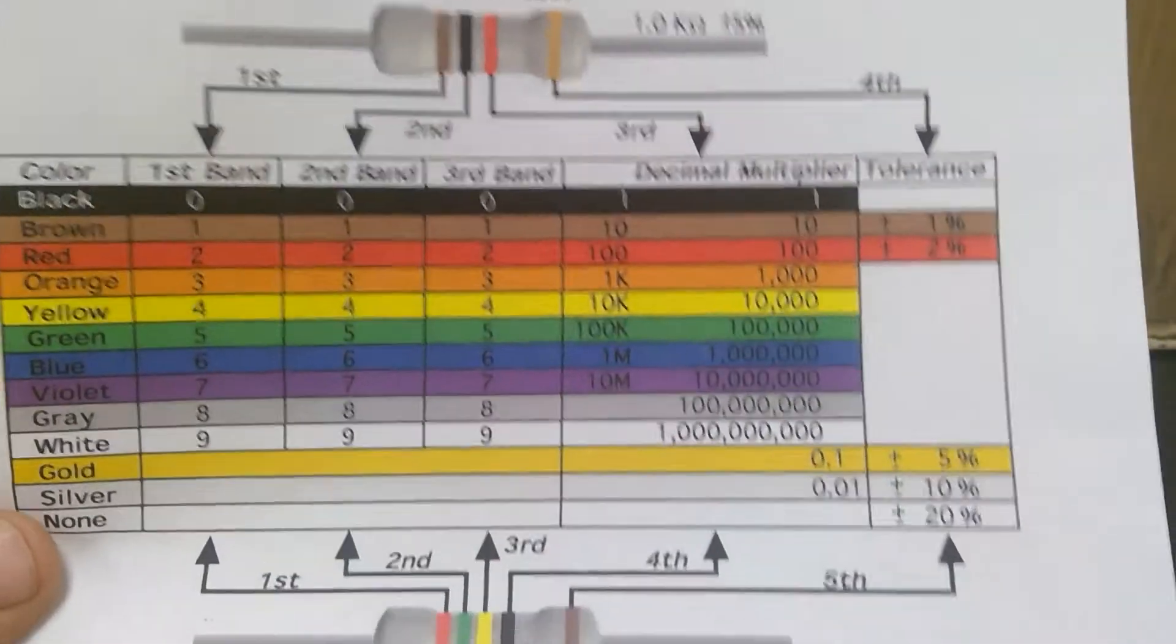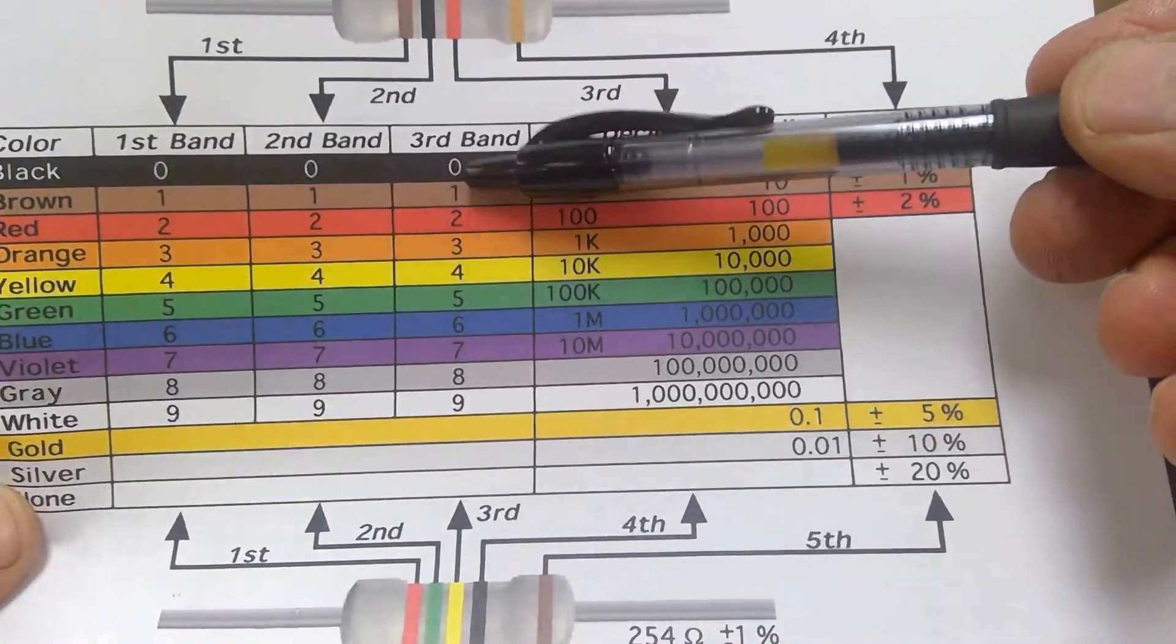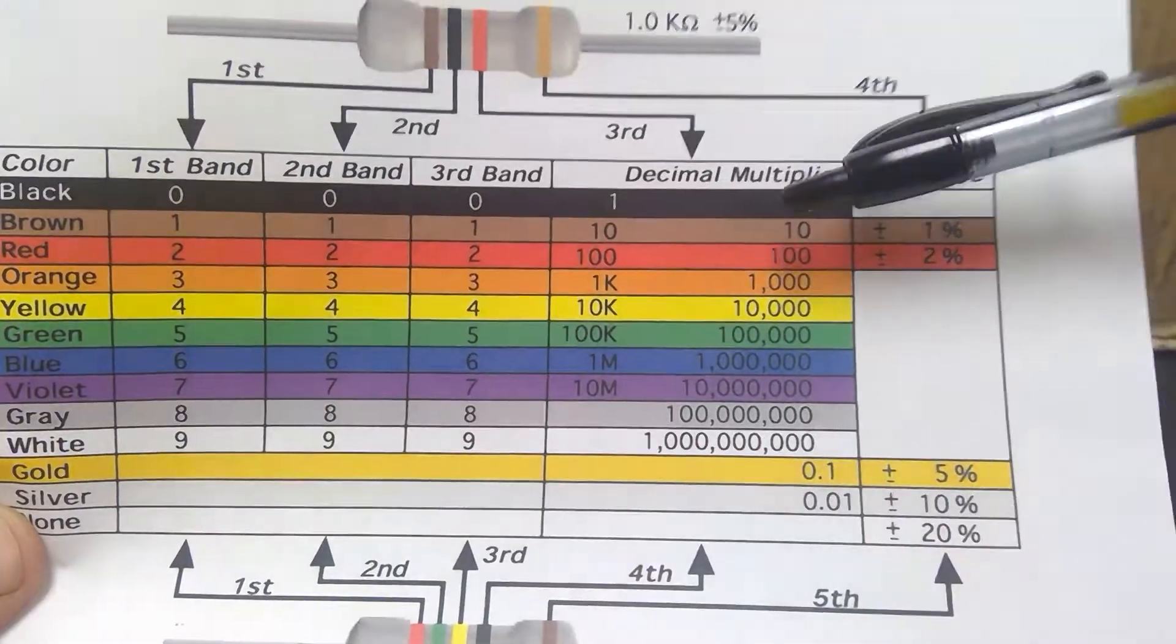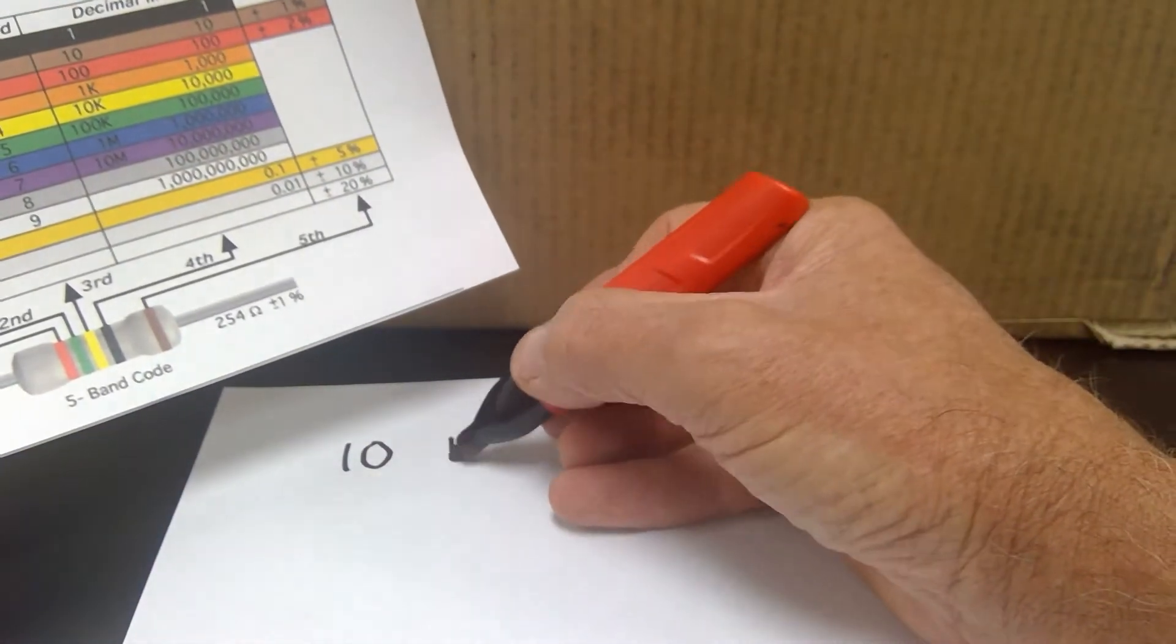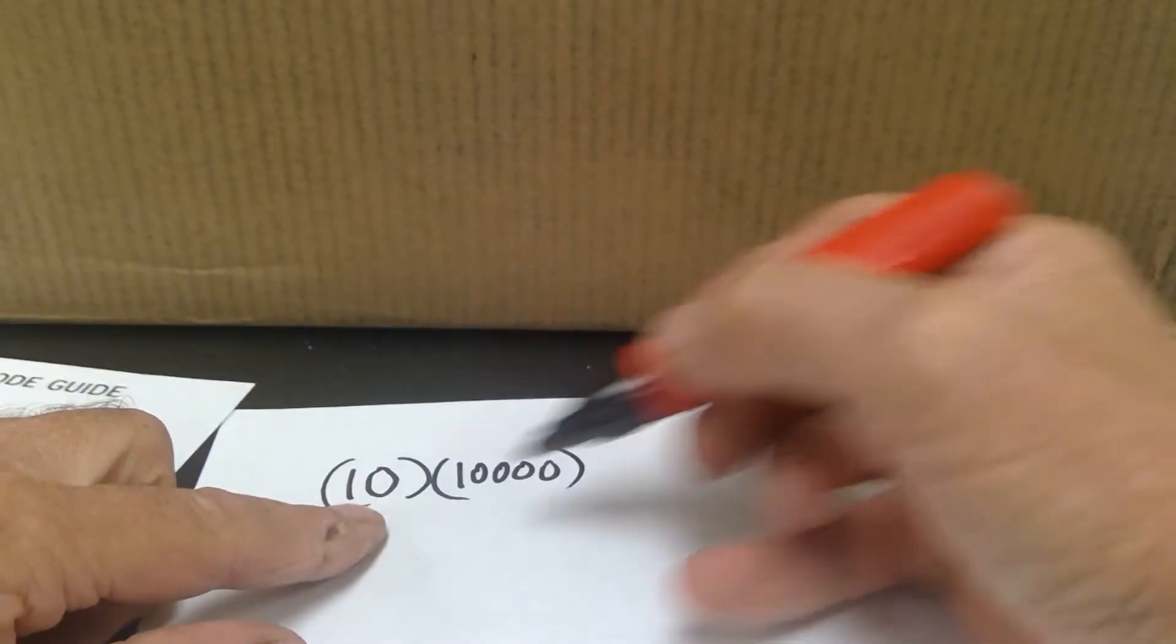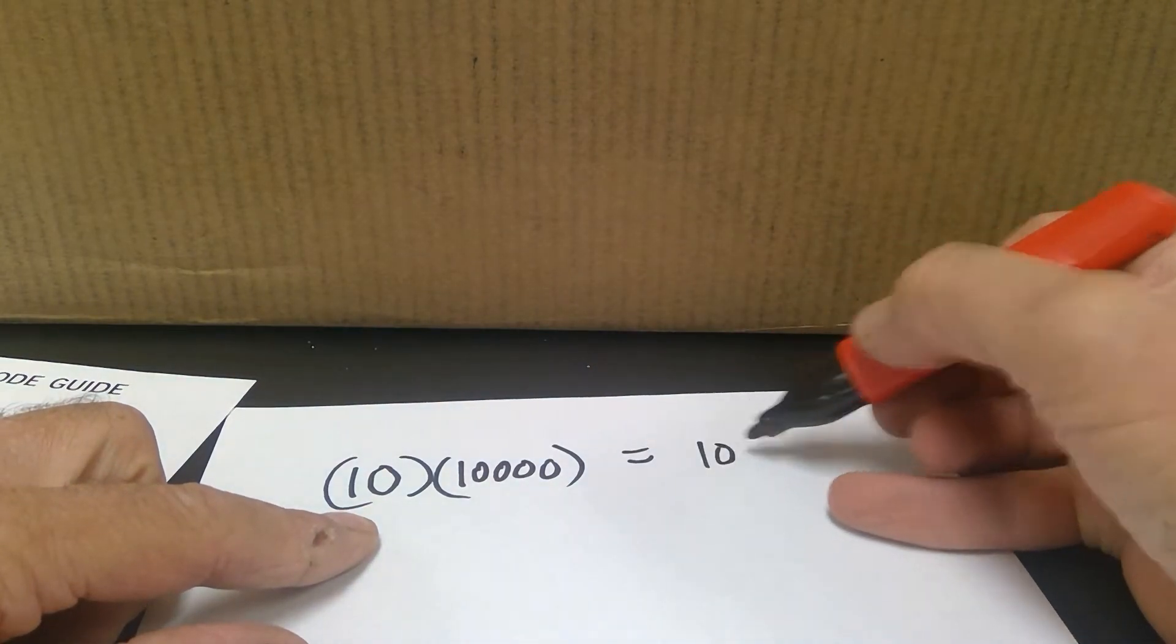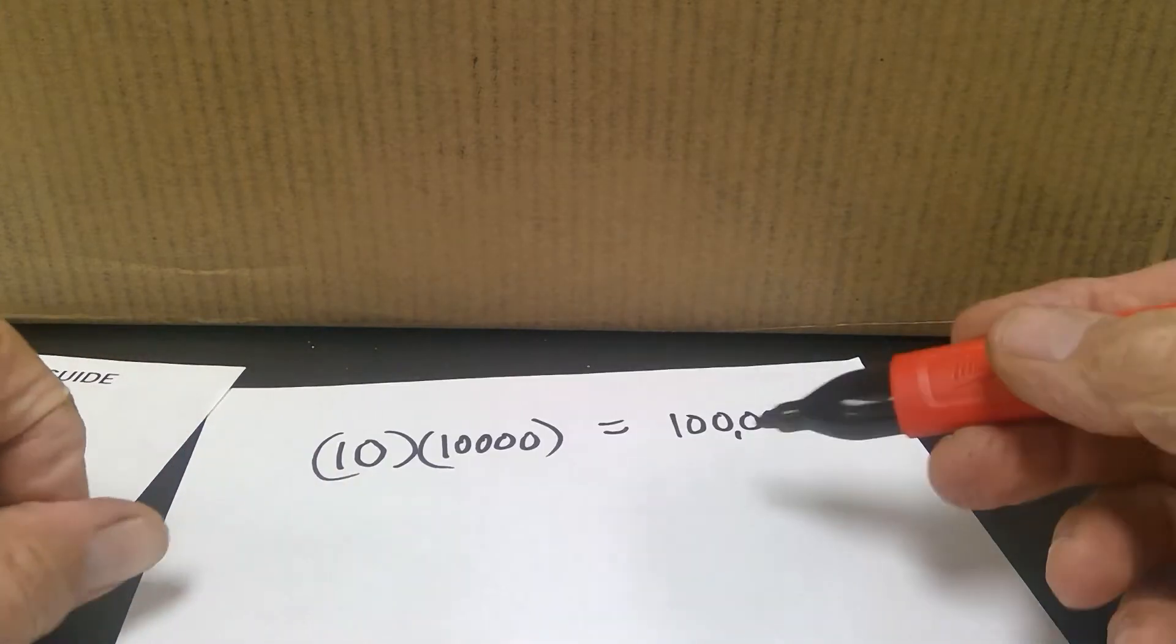The third band was yellow. And for a four band, I'm going to come over here, not into the third band column, but into this decimal multiplier column. And I'm going to come down to yellow, and I'm going to see that that number is 10,000. And I'm going to write that down. Now what this is, is the number 10 times the number 10,000. So the value of that resistor is 100,000 ohms.